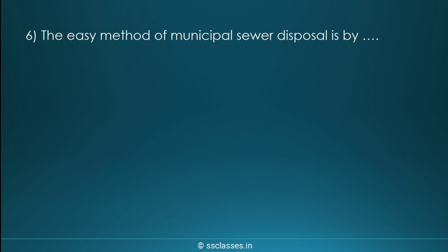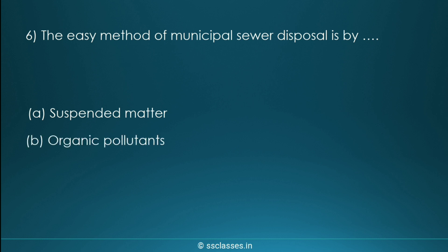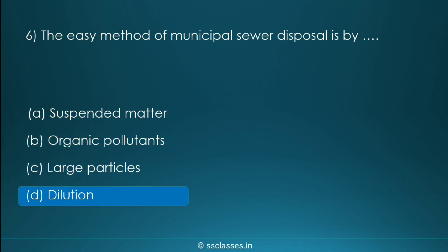Question six: the method of municipal sewage disposal is by which process? Options are suspended matter, organic pollutants, large particles, or dilution. The first three options are just impurities, not processes. The last one — dilution — is the correct process. In this method, the waste is dumped into an available body of water such as a river, lake, or pond.